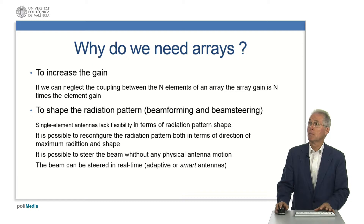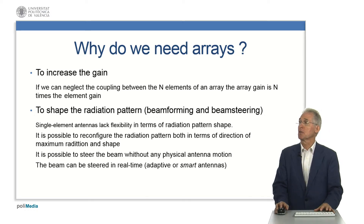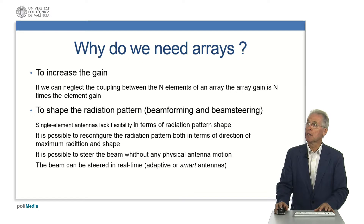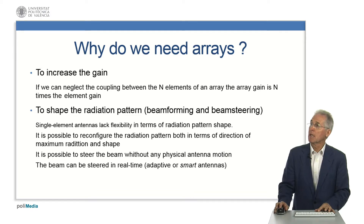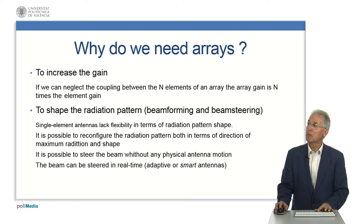Or, we may need an array because we want to shape the radiation pattern. A single element has a fixed radiation pattern. We may want to shape the radiation pattern by changing the direction of maximum radiation — beam steering — or by changing the shape of the beam, or even both. Beam steering can be accomplished without any physical motion of the antenna, and the antenna can be steered and shaped in real time, as in adaptive or smart antenna applications.